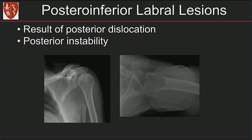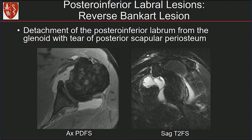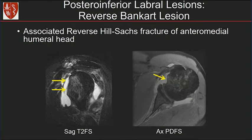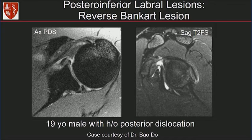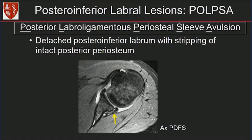Postero-inferior labral lesions commonly result from posterior dislocation and posterior instability. These radiographs show the light bulb appearance and posterior subluxation. The reverse Bankart lesion is the detachment of the postero-inferior labrum from the glenoid with tearing of the periosteum. Here's a diminutive postero-inferior labral tear — the sagittal images are really helpful showing detachment of that labrum from the glenoid. The same patient has a reverse Hill-Sachs fracture of the anteromedial humeral head. A POLPSA lesion is similar to an ALPSA but occurs posteriorly, with detachment of the postero-inferior labrum and stripping of the intact posterior periosteum.